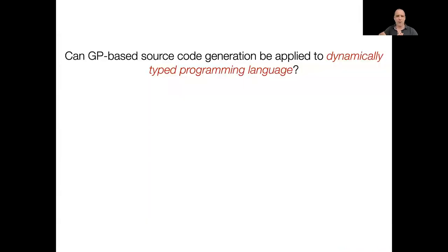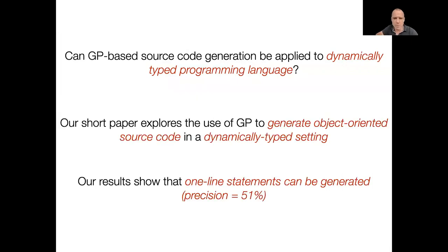This is exactly the scope of this paper. The research question we addressed is whether genetic programming-based source code generation can be applied to dynamically typed programming languages. This short paper explored the use of genetic programming to generate object-oriented source code in a dynamically typed setting. The research showed that one-line statements can be generated with a precision of 51%.